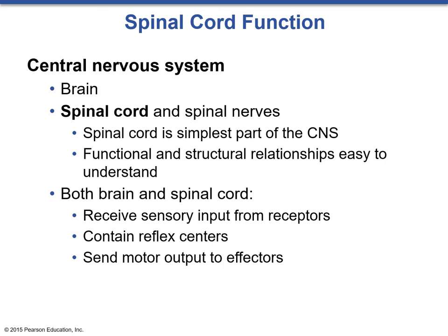The spinal cord and spinal nerves form the simplest part of the central nervous system. Functional and structural relationships here are very easy to understand. The anterior part of the spinal cord is motor, and the dorsal portion is sensory. Both the brain and spinal cord receive sensory input from receptors, contain reflex centers, and send motor output to effectors, but the spinal cord does so in a much simpler pathway.